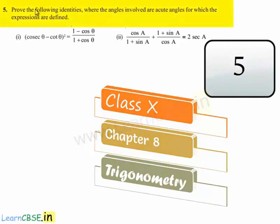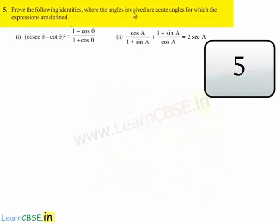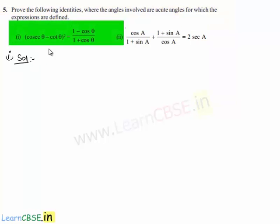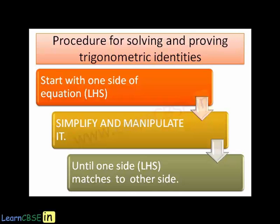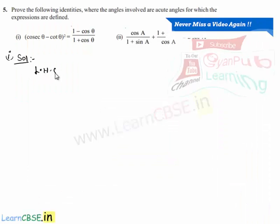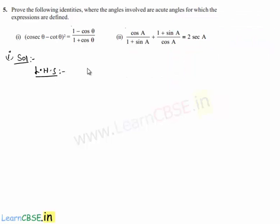Moving on to the fifth question — prove the following identities, where angles involved are acute angles for which the expressions are defined. Moving on to the solution for the first bit. Let us consider the left hand side, which is (cosec θ - cot θ)².